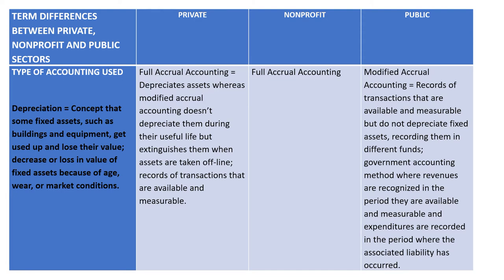We also went through the different types of accounting used. Remember that the key thing to understand is that full accrual accounting includes depreciation — the concept that fixed assets get used up and decrease in value. In the public sector they use modified accrual accounting because they do not depreciate fixed assets. This isn't an accounting class; I'm just introducing you to these concepts.